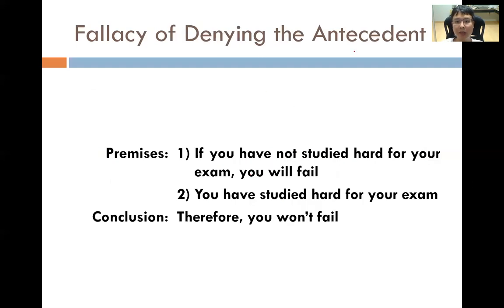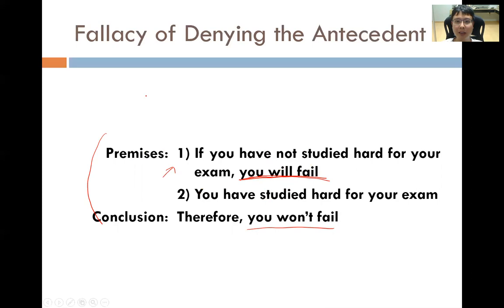Fallacy of denying the antecedent. Premise 1: if you have not studied hard for your exam, you will fail. What we want to do is deny the fact that we will fail, so we say Premise 2: you have studied hard for your exam, therefore you won't fail. However, this is not a valid argument because Premise 1 only says if you have NOT studied hard you will fail — it says nothing about whether you will fail if you have studied hard. In fact, as students we know that even if you studied hard, you can still fail. This is the fallacy of denying the antecedent.